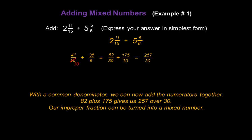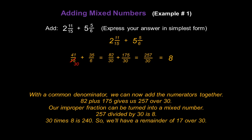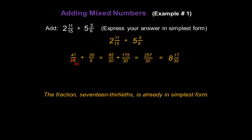Our improper fraction two hundred fifty-seven over thirty can be turned into a mixed number. Two hundred fifty-seven divided by thirty is eight, so the whole number portion is eight. Since thirty times eight is two hundred forty, we have a remainder of seventeen, giving us seventeen over thirty. The fraction seventeen-thirtieths is already in simplest form, so our answer is eight and seventeen-thirtieths.